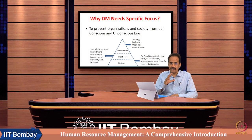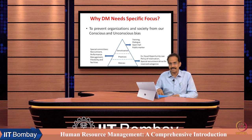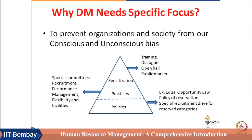In a nutshell, diversity management needs specific focus on three aspects. Aspect one is about policies, and on this aspect, both organization and state have an important role. The state has a role in terms of making regulations and enforcing their implementation. In India there are regulations related to reservations for different sections of society; in the USA there is an equal opportunity law. Organizations also commit themselves and state a policy of equal opportunity. All these come in the very first step of diversity management, which is about policies.